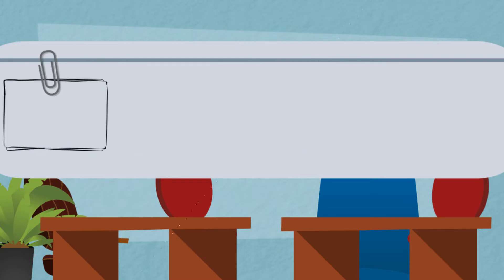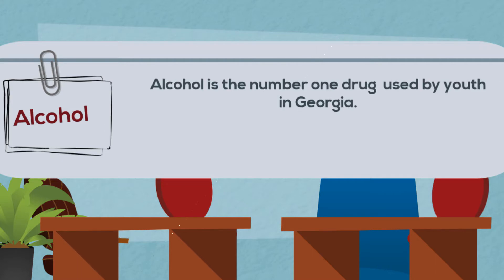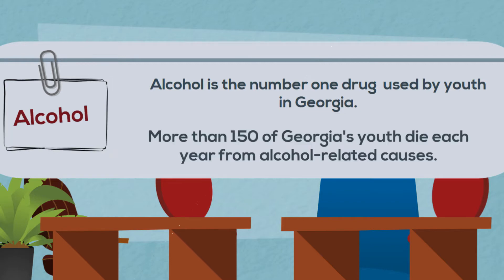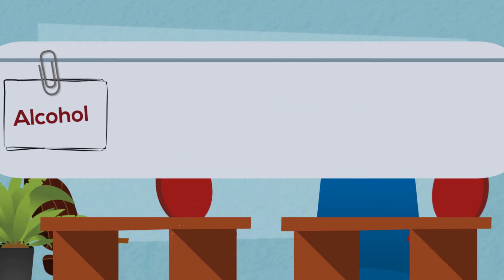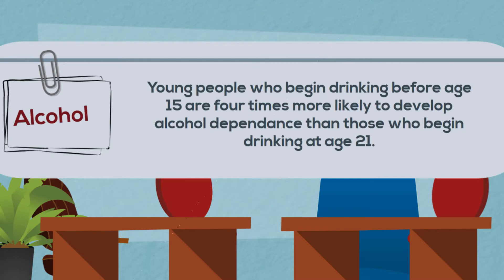Underage drinking is a serious problem in Georgia. Alcohol is still the number one drug used by youth in Georgia and the United States. More than 150 of Georgia's youth die each year from alcohol-related causes. Young people who begin drinking before age 15 are four times more likely to develop alcohol dependence than those who begin drinking at age 21.